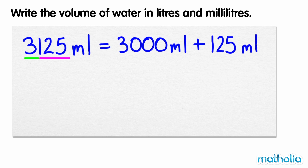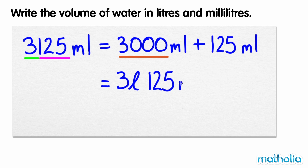1,000 millilitres is equal to 1 litre, so 3,000 millilitres is equal to 3 litres. So the volume of water is 3 litres, 125 millilitres.